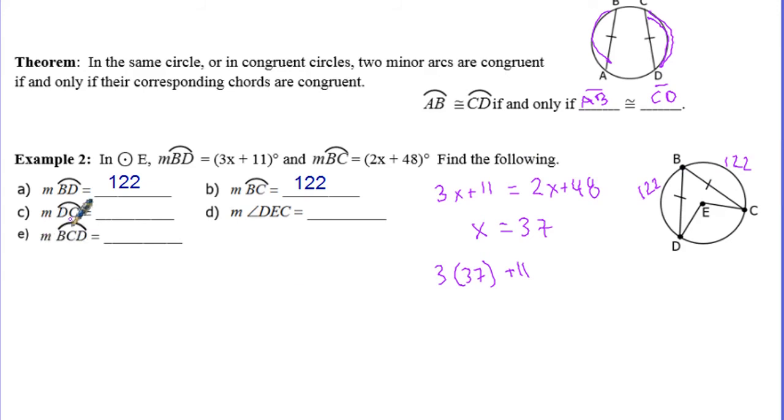The next one is what's arc DC. Notice we didn't really do anything with this arc here, but it's basically what's left over. If it's what's left over in the circle, we can just do 360 minus 122 minus 122, and that gives us 116 degrees left over here. This one's asking us for angle DEC. DEC is this central angle right here. E is in the middle, E is my center, the vertex is there. So central angles are congruent to the arcs, so arc and angle equal each other.